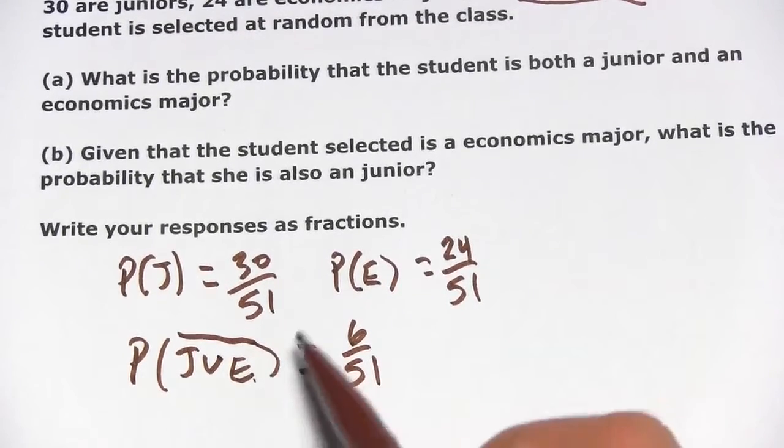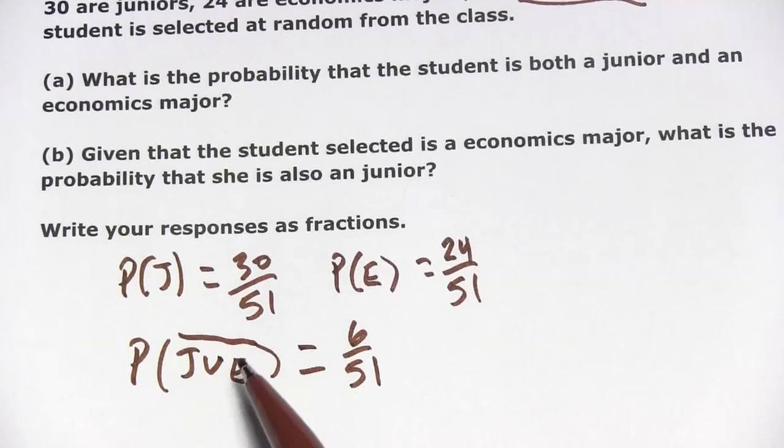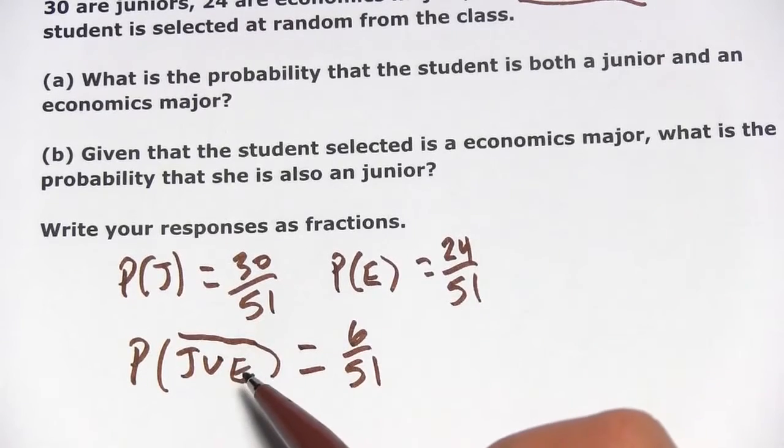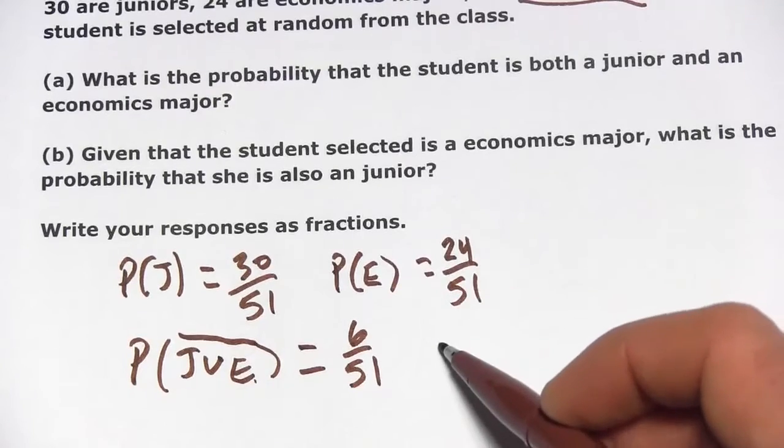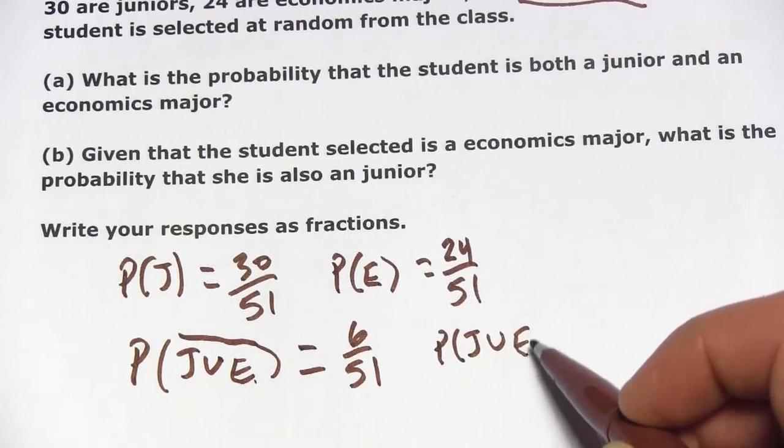And that might seem a little odd to have the probability of not the union here. But we can figure out the probability of the union pretty easily by the complement rule. The complement rule says that if you have not something, then you can find out the thing by subtracting it from 1. So the probability of the union of being a junior and an economics major,